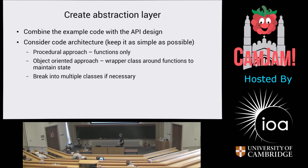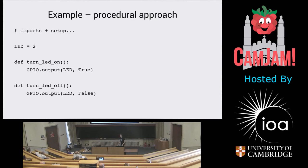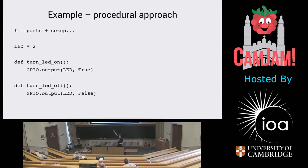Then move on to the next step: create an abstraction layer — combining the example code with your API design. You've got your code that was maybe six lines to turn on an LED, and you think about how the user would access that in the end. There are a few different approaches. One is a procedural approach with setup at the top — I've created two functions here: turn_led_on, which just turns on that LED at pin number two, setting it to true, and turn_led_off. That's a very simple, basic approach. In your API it would be myhat.turn_led_on or myhat.turn_led_off.